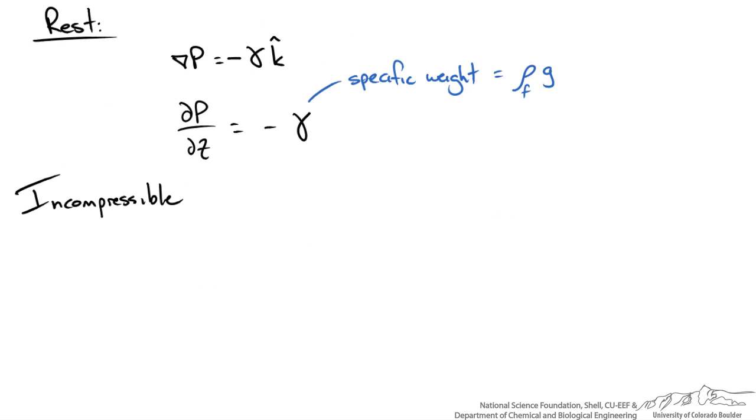So let's take a look at the case where our fluid is incompressible. If it is incompressible, our density is constant, not a function of pressure. So that means our specific weight is constant. So we have a pretty easily solvable differential equation.